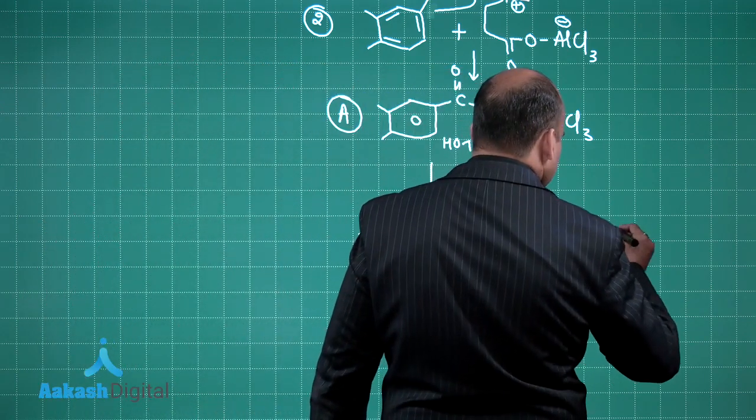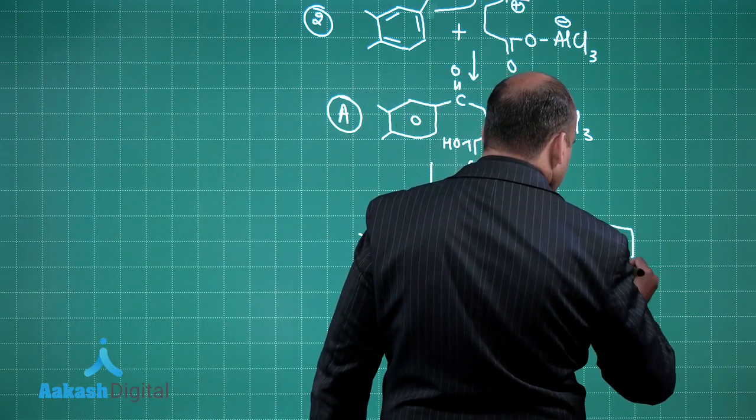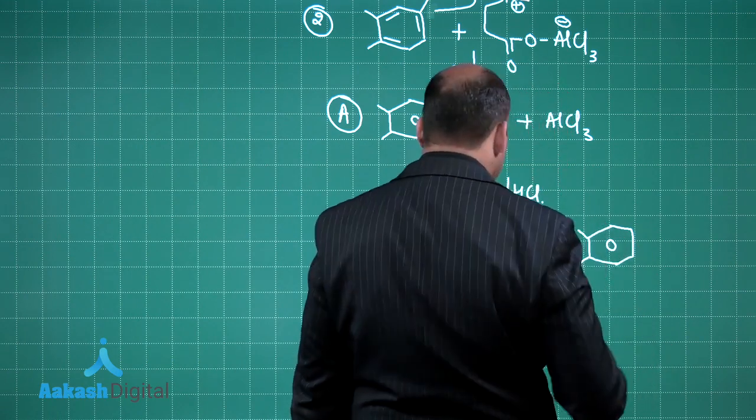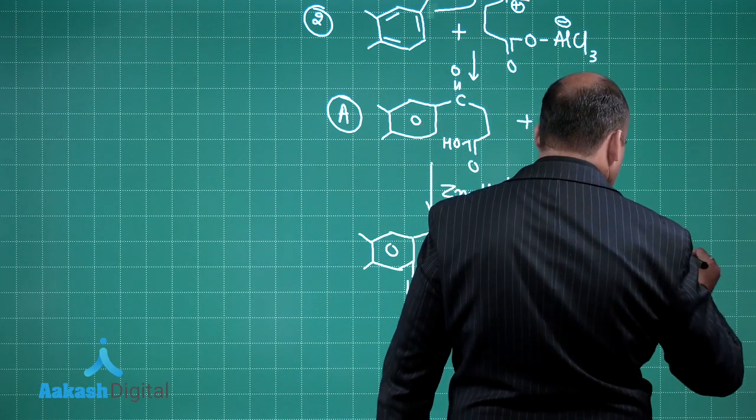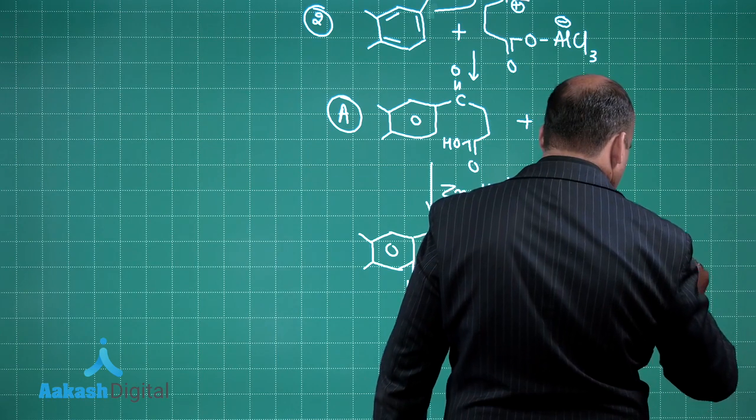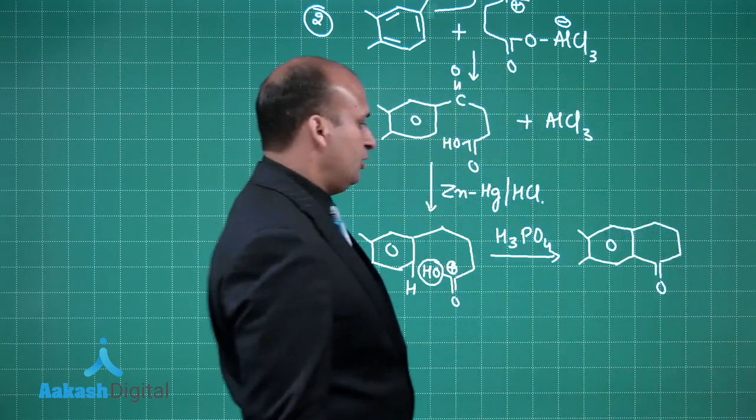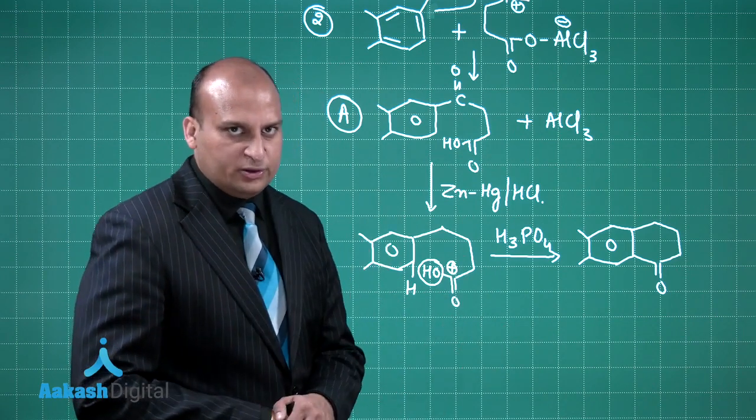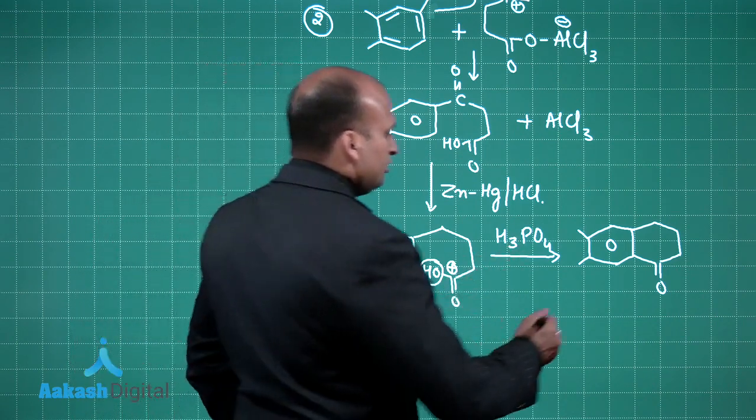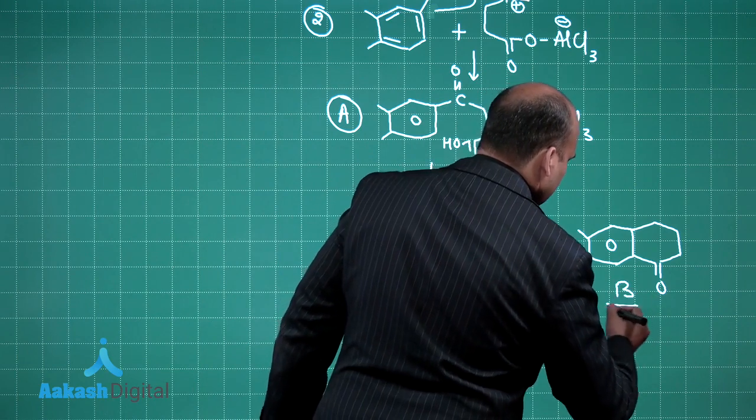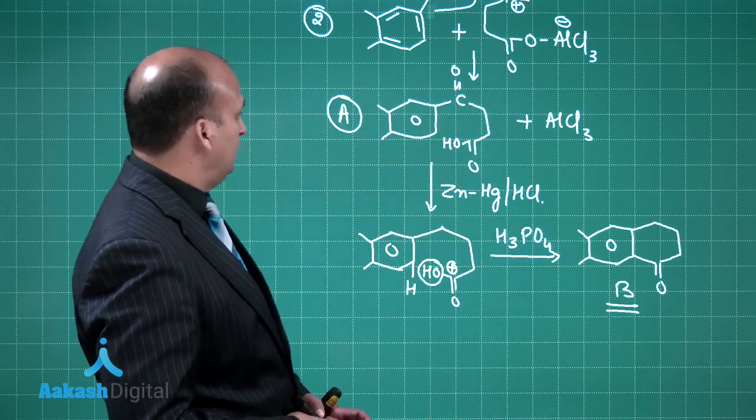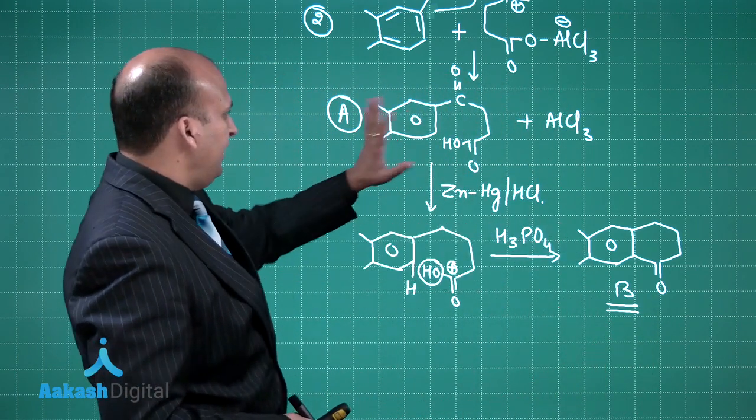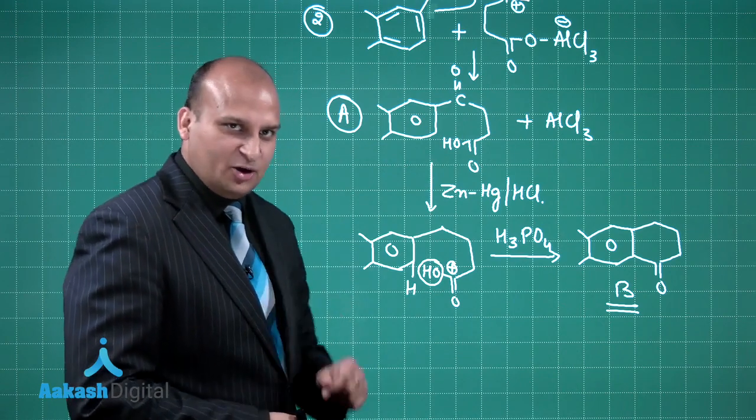So this carbonyl carbon will then substitute this hydrogen. So you will be getting this product. So this OH and this H plus is actually moving out as water. So this is your compound B. So have a look at B and A. Now let us see which is the right option.